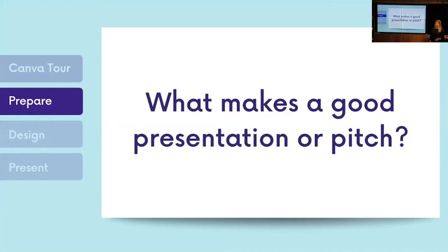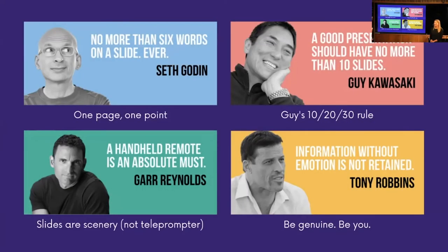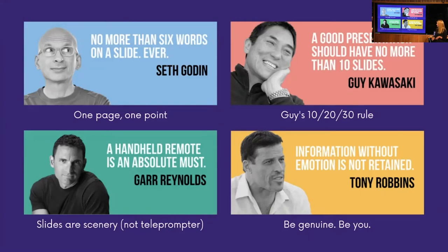Now, getting to the most important section: what makes a good presentation or pitch? Turning to the experts — Seth Godin believes in no more than six words on a slide, ever, one point per slide. Guy Kawasaki swears by the 10-20-30 rule: no more than 10 slides, no more than 20 minutes, and never font smaller than size 30. Gar Reynolds believes slides are only scenery, not a teleprompter. And Tony Robbins says information without emotion is not retained — so be genuine, create human connection, and just be yourself.